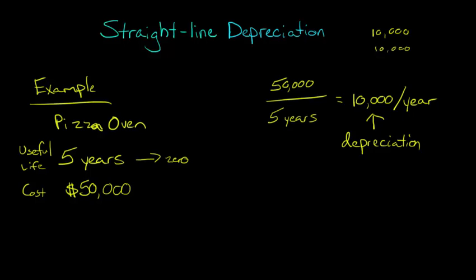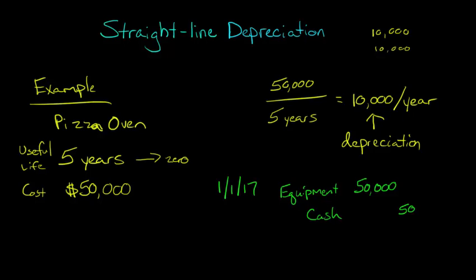So the journal entry — let's say we purchased this asset on January 1st, 2017. We would debit equipment for $50,000. And then let's just say you paid cash for it, so we credit cash for $50,000.